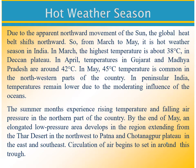The hot weather season or summer: due to the apparent northward movement of the sun, the global heat belt shifts northward. Thus from March to May it is hot weather in India. In March the highest temperature is about 38 degrees Celsius in the Deccan Plateau. In April, temperatures in Gujarat and Madhya Pradesh are around 42 degrees Celsius. In May, 45 degrees Celsius is common in the northwestern parts, especially in Rajasthan where it can go up to 48 degrees. In peninsular India temperatures remain lower due to the moderating influence of the ocean.